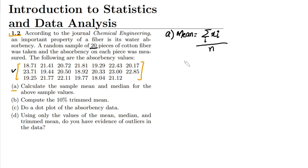What are these values? We have to add them together. So 18.71 plus 21.41, and up to the last value which is 21.12. Adding them all together and dividing it over the number of samples, which are 20.